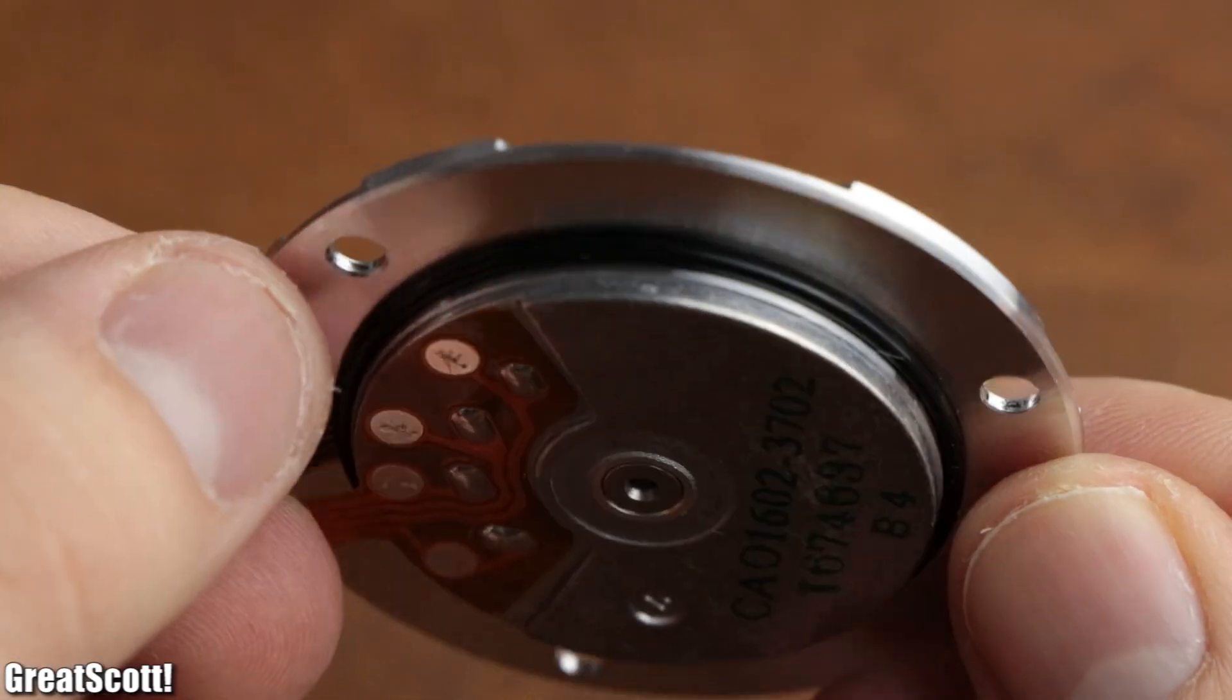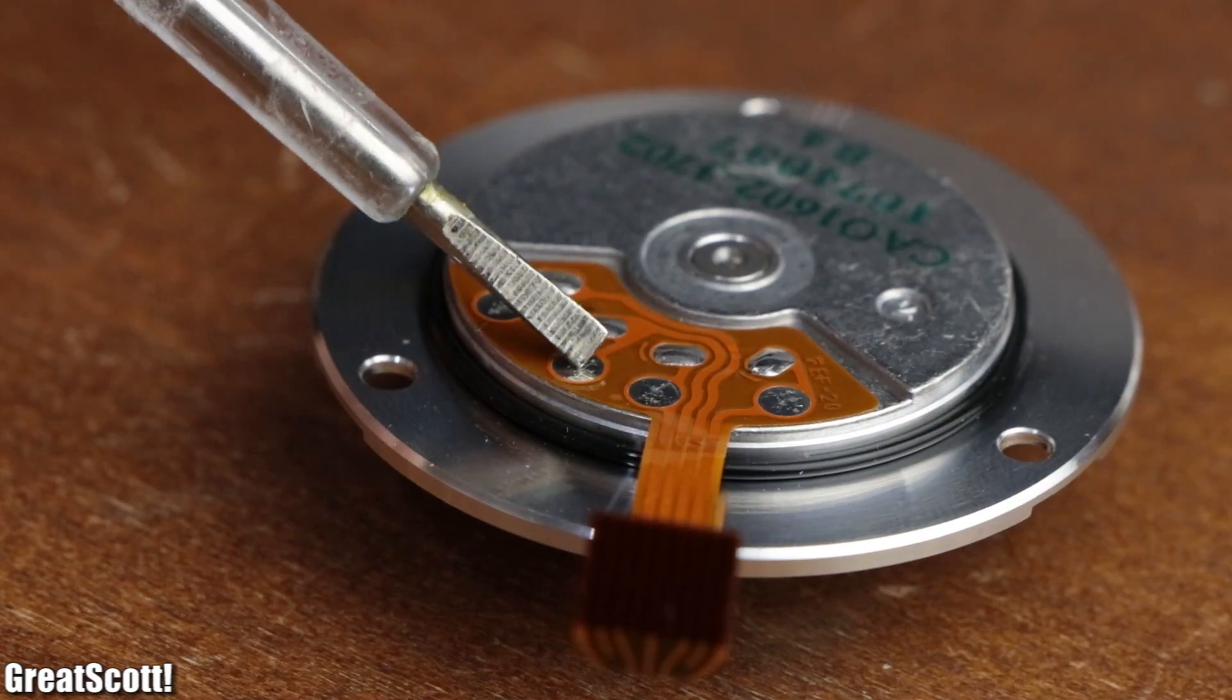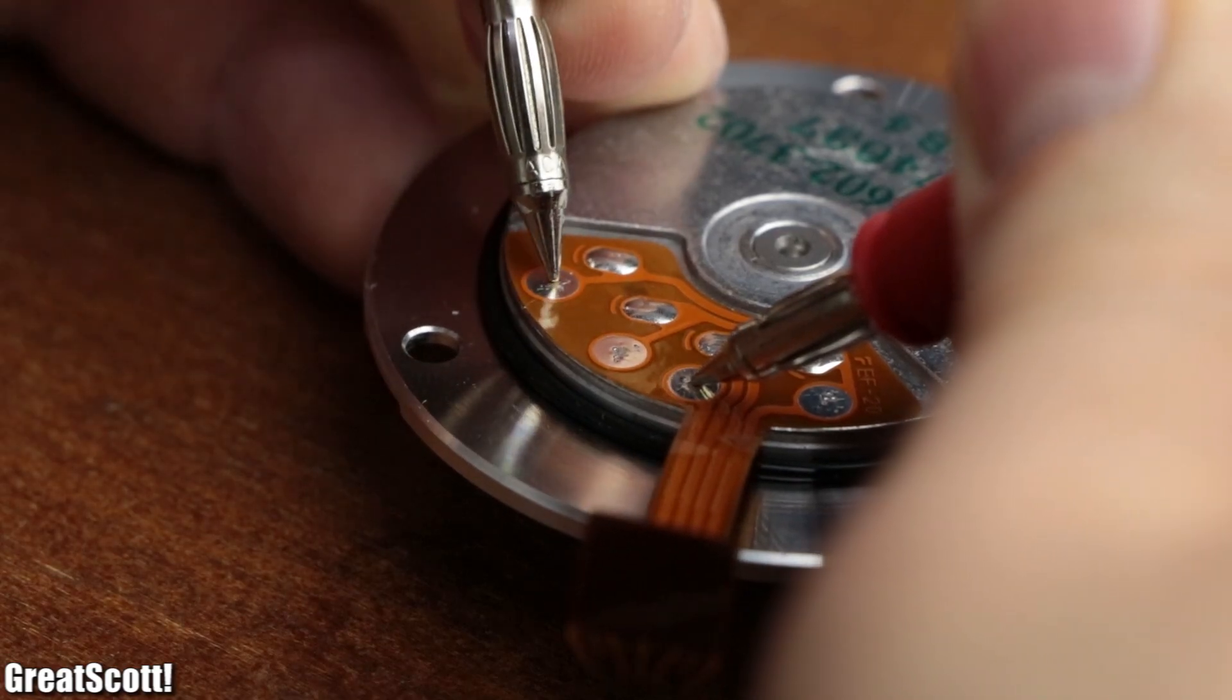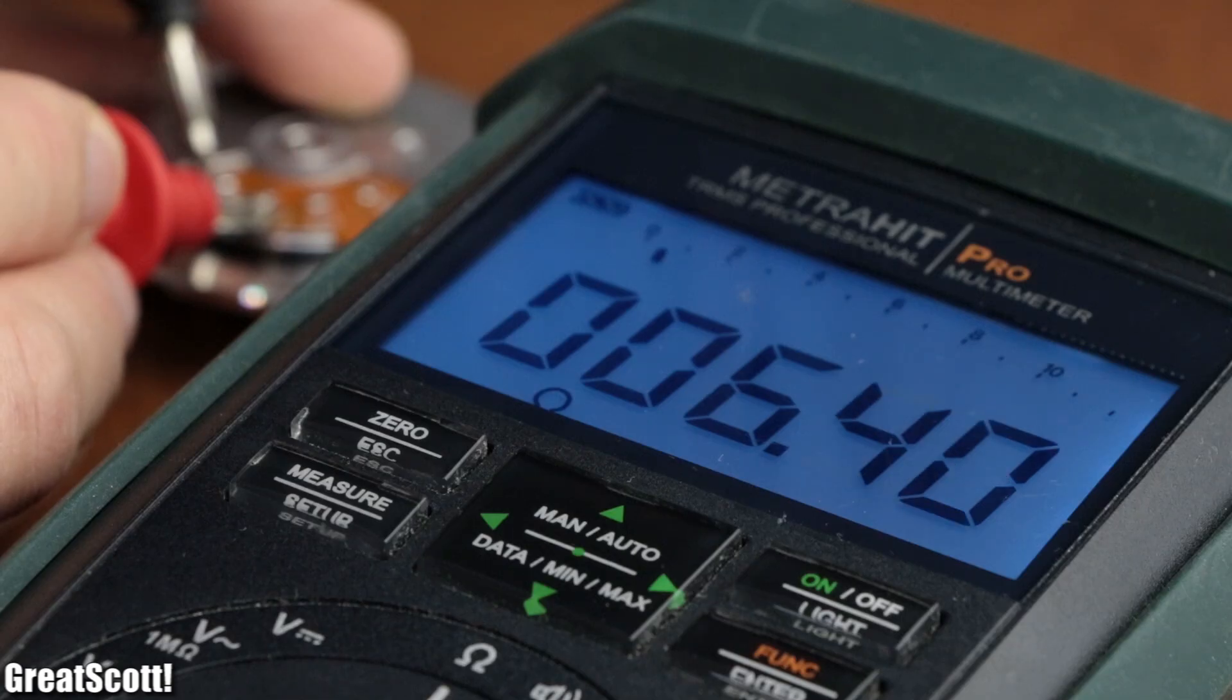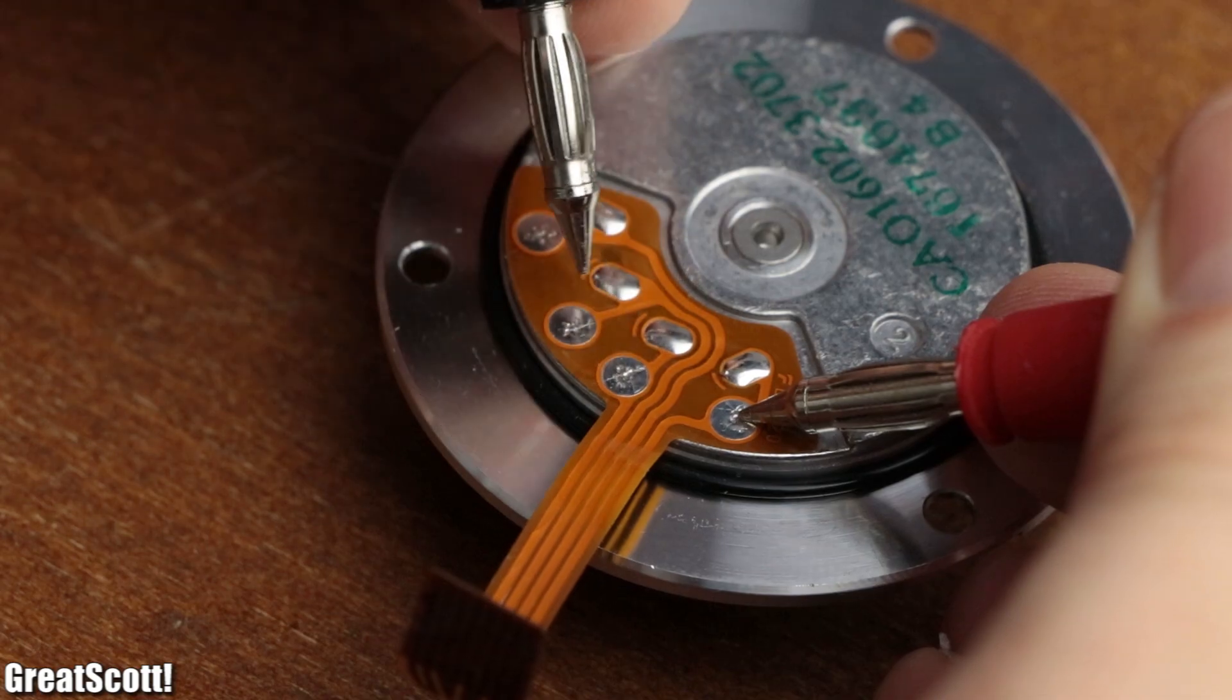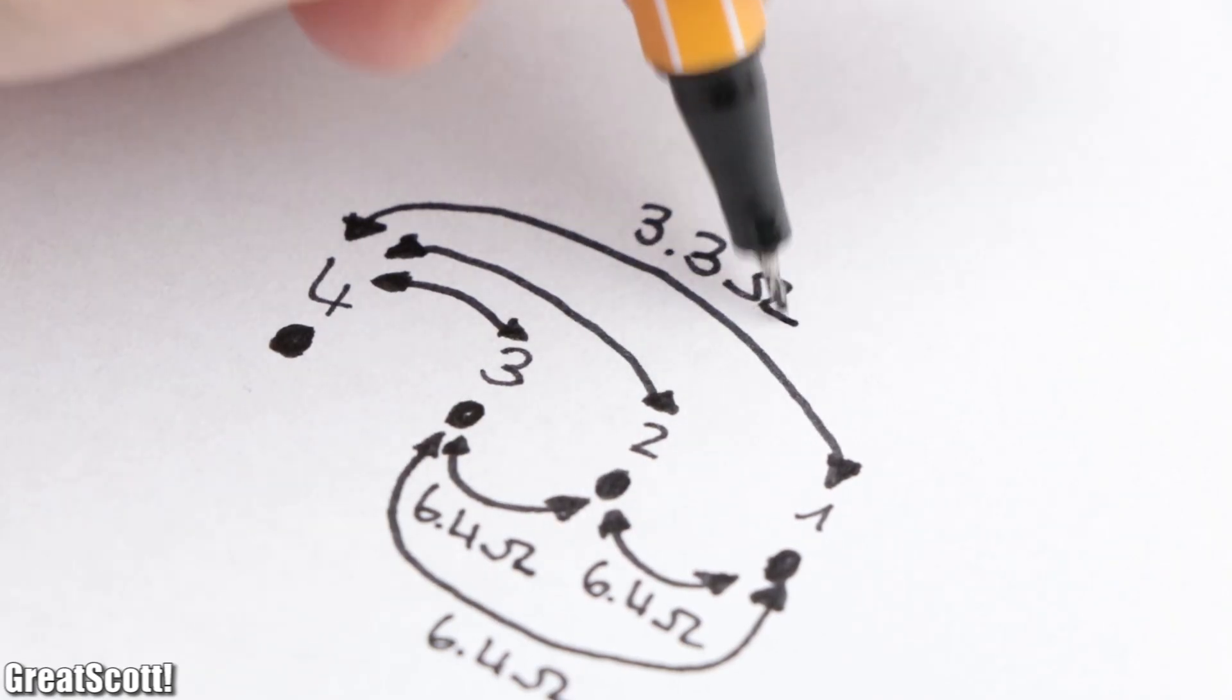If we take a closer look at the motor, we can see that it features four breakout points at the back. By measuring the resistance between all of them, I noticed that there's a resistance of 6.4 ohms between three points, while there's a lower resistance of 3.3 ohms between each of the three points and the fourth point.